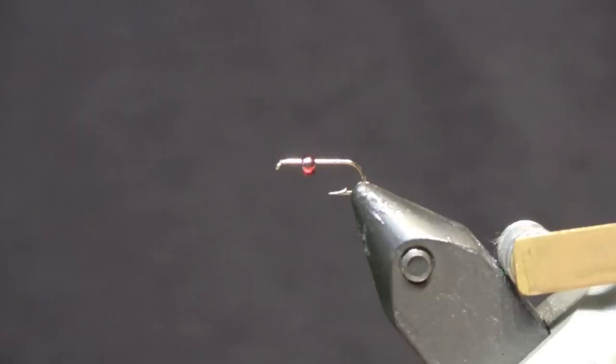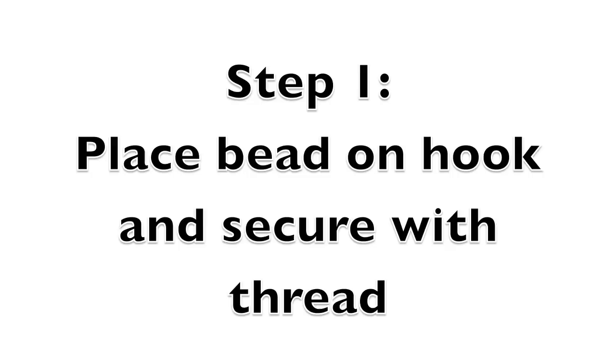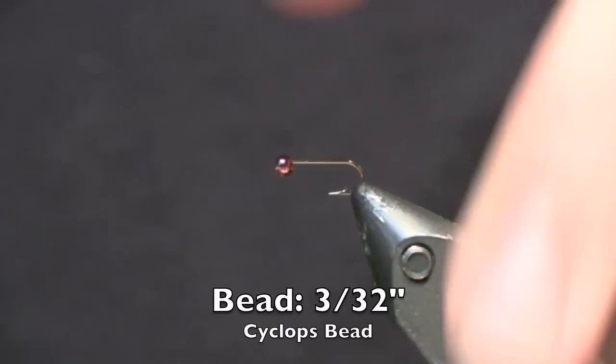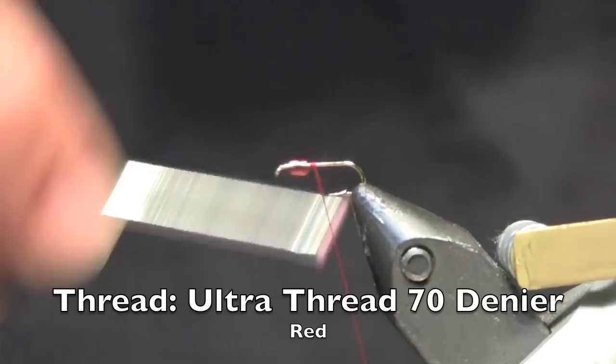To tie the Rojo Midge we're going to be using Daiichi 1560 size 18 hooks. Step 1, you're going to slide your bead up onto the hook shank. After that, you're going to attach the thread about halfway down the hook shank and secure it in place.